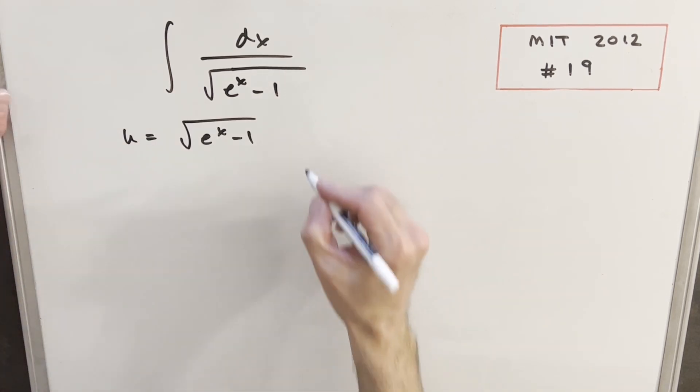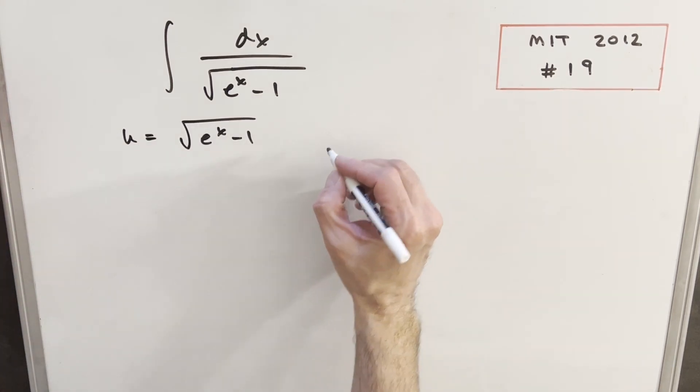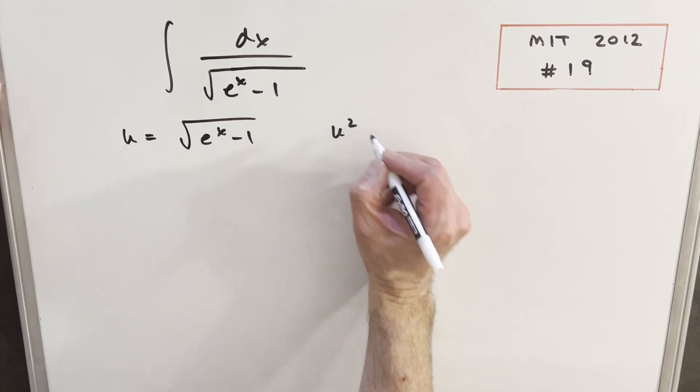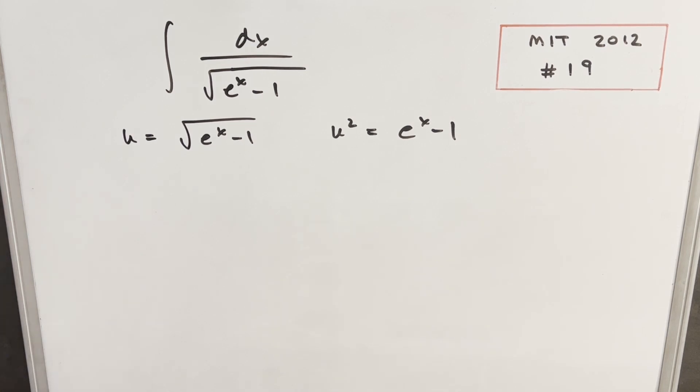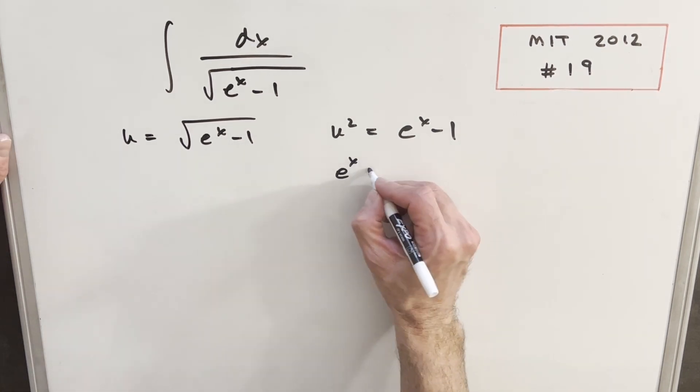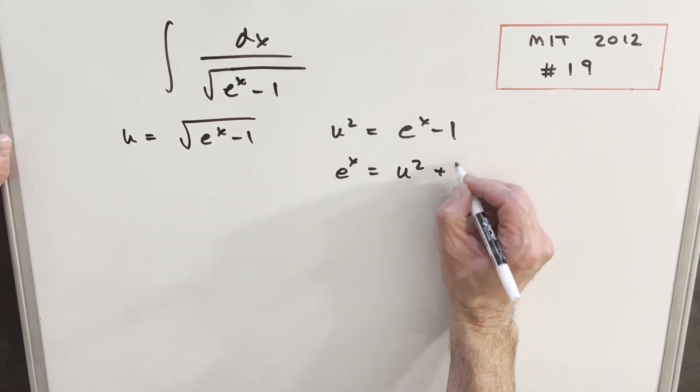Then here, after making this substitution, we can actually solve for e to the x. So I can just square both sides. u squared is going to be e to the x minus 1. So then our e to the x value will just be u squared plus 1.